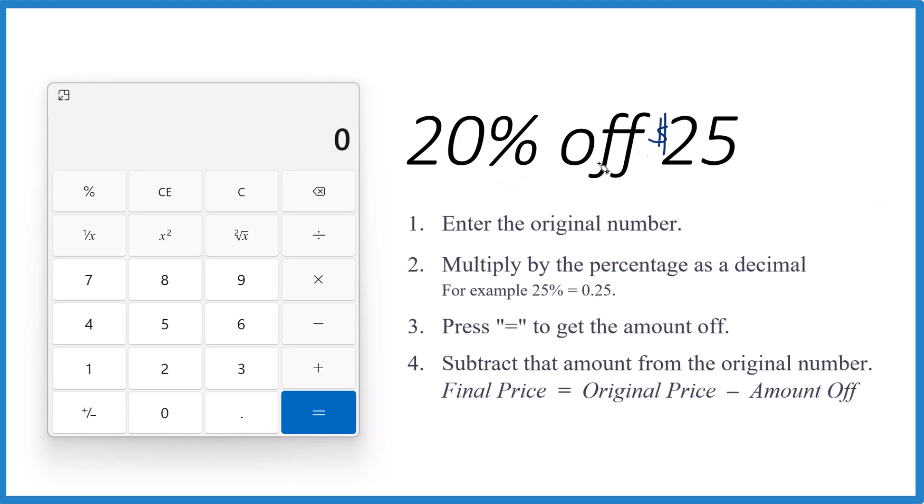So we take the original number, that's the $25, and we're going to multiply it by the percentage as a decimal. So 20 becomes 0.20, or you could just call it 0.2, so times 0.2.